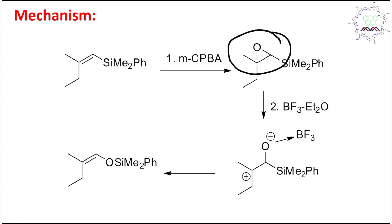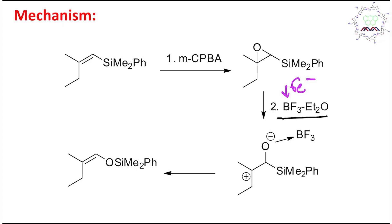So what happens when alkene is oxidized by MCPBA? Simple epoxide formation — I have already discussed this reaction previously. So in the first step, MCPBA converts this into an epoxide. In the second step, BF3 etherate is given, and we know that boron's outermost valence shell has six electrons, meaning it is actually a Lewis acid.